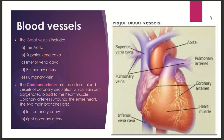Coronary arteries supply oxygenated blood and transport it to the heart muscles. These are the additional blood vessels that cover the entire heart muscles. Coronary arteries are of two types: left coronary artery and right coronary artery.